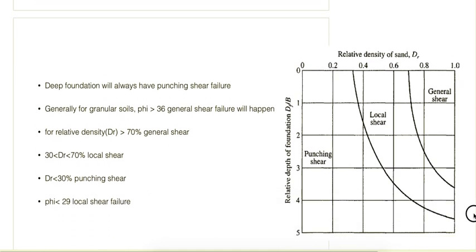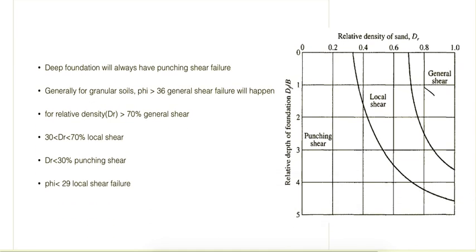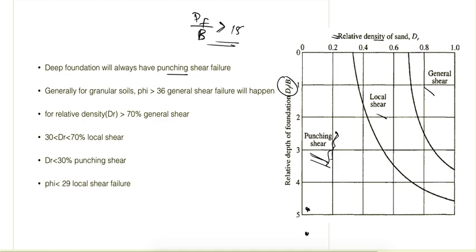Regarding when each failure type occurs: deep foundations always fail by punching shear failure, which is mostly common for deep foundations. This is related to a curve between relative density and relative depth, that is the Df/B ratio. When Df/B is greater than 15, as in deep foundations, punching shear failure occurs according to this curve. This curve is for sands, since we are talking about relative density and relative depth for granular soil.